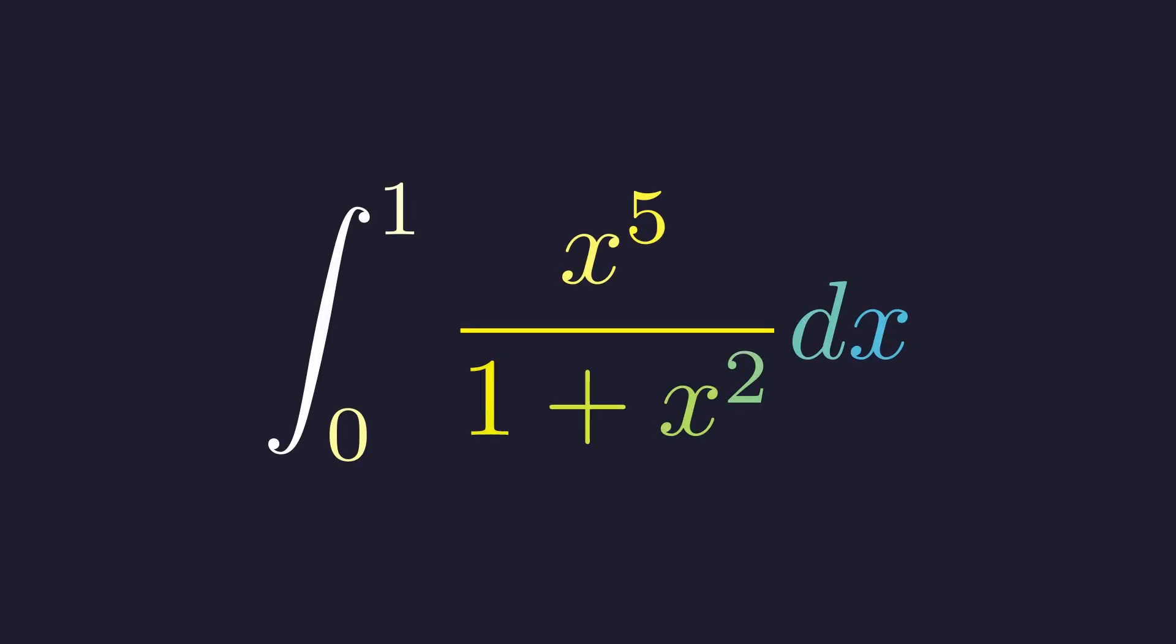This integral looks impossible: x to the fifth over 1 plus x squared. But there's a hidden structure here that makes everything click into place.